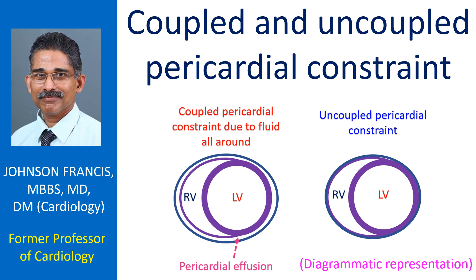Coupled pericardial constraint is exerted by uniform liquid pressure, as in cardiac tamponade. Uncoupled pericardial constraint is regional surface pressure, as occurs in constrictive pericarditis. Mathematical modeling has shown that coupled pericardial constraint produces greater ventricular interdependence, increasing the chance of pulsus paradoxus in cardiac tamponade. Uncoupled pericardial constraint produces greater right ventricular elastance, increasing the likelihood of Kussmaul's sign.